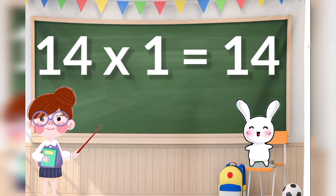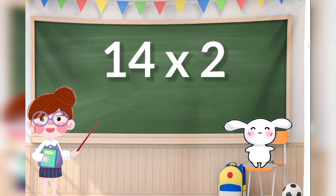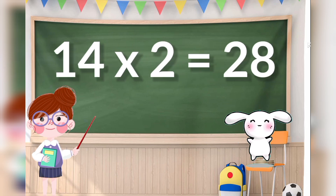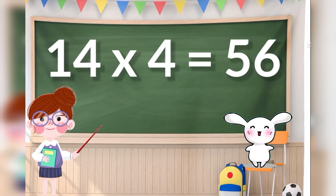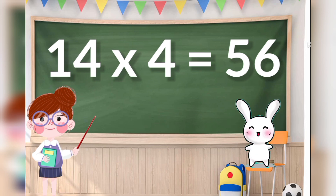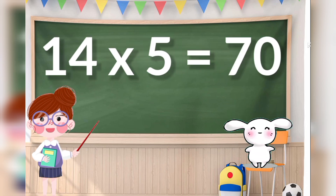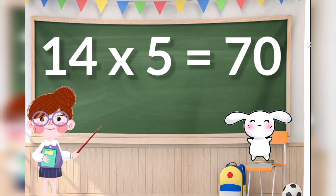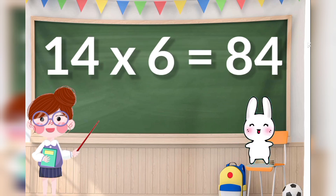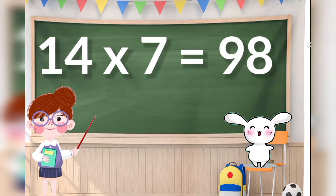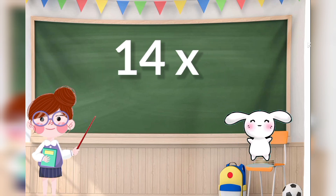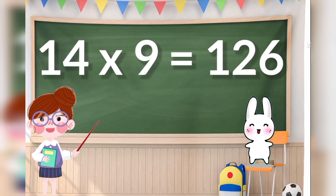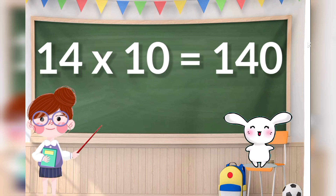14 ones are 14, 14 twos are 28, 14 threes are 42, 14 fours are 56, 14 fives are 70, 14 sixes are 84, 14 sevens are 98, 14 eights are 112, 14 nines are 126, 14 tens are 140.